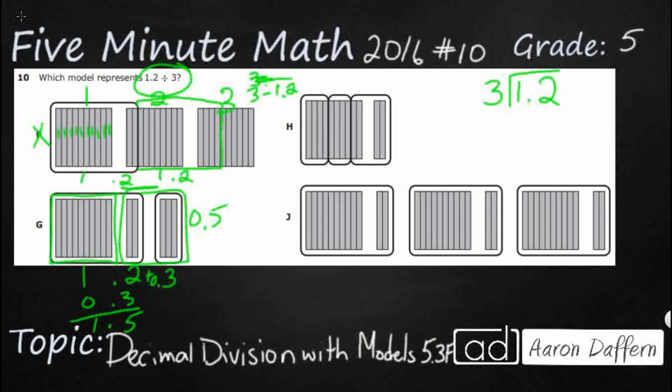So what we have in H is we've got in total—that's 1. And looks like I've got 2 tenths there. Okay, so I've got 1.2 in H.